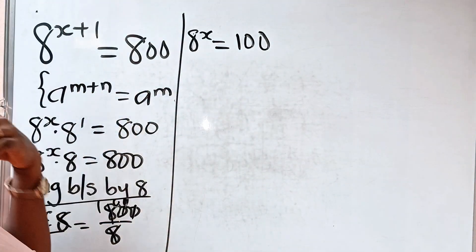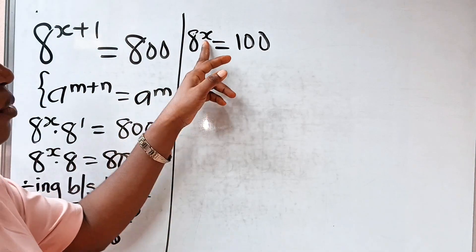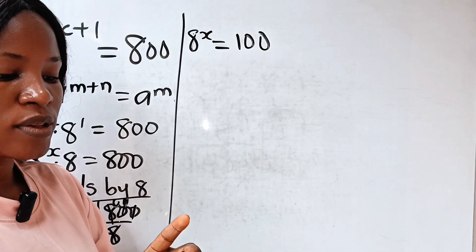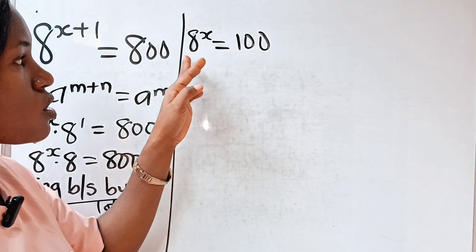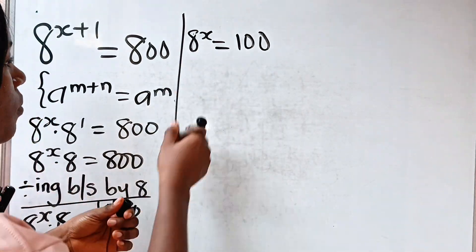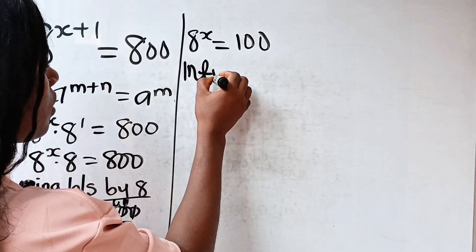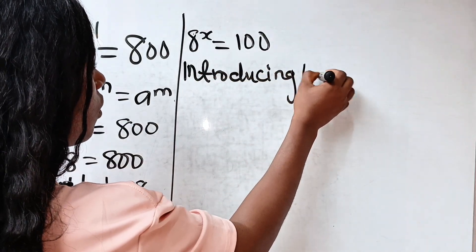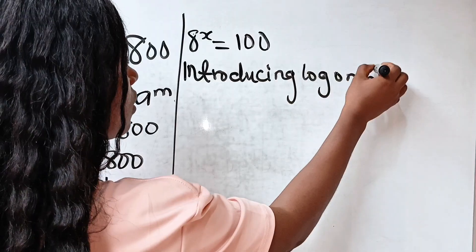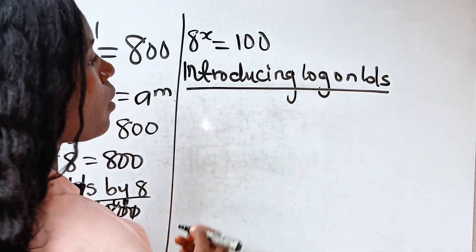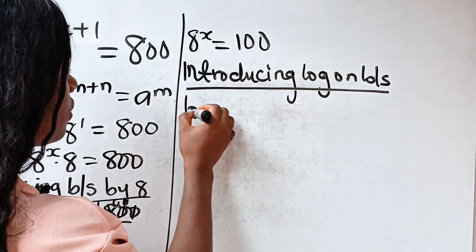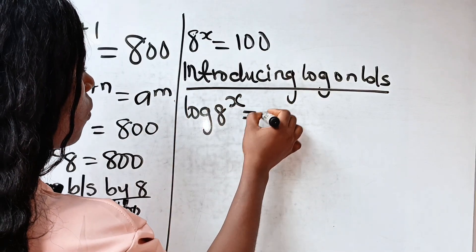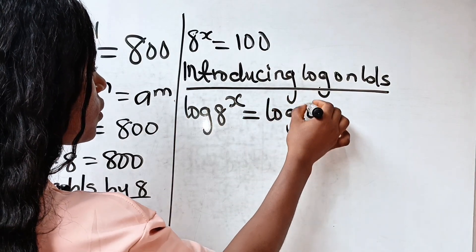Now, remember that since the variable we are looking for is the power, the only way to find it is to introduce log to both sides. Introducing log on both sides, we are going to have log of 8 to the power of x is equal to log 100.